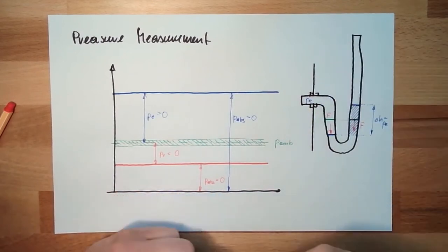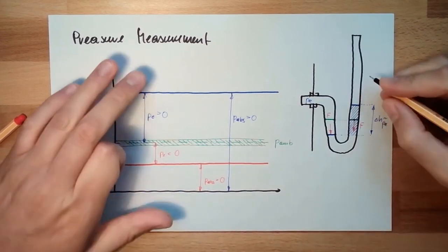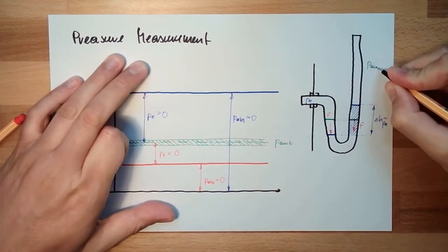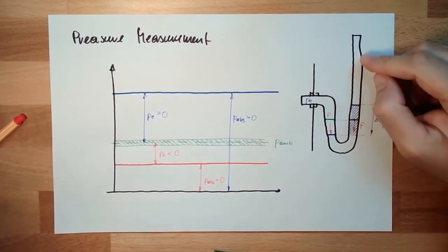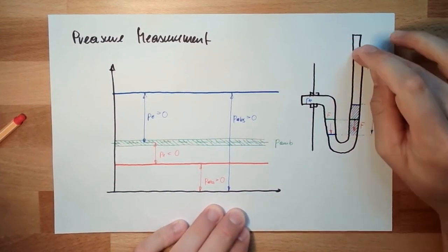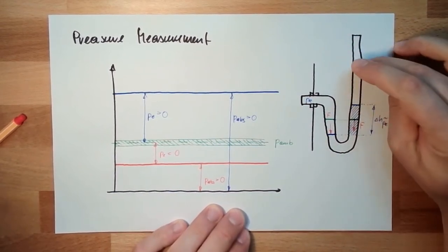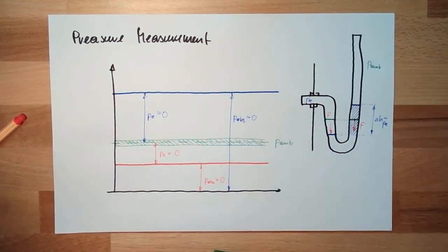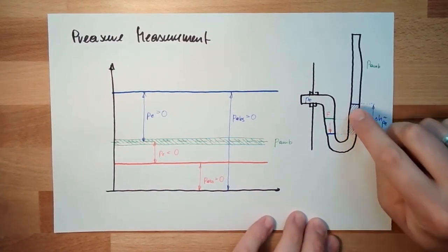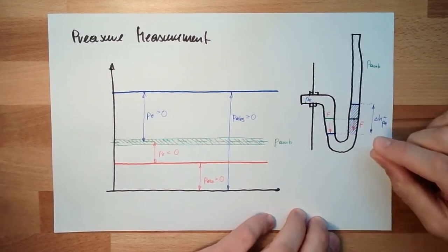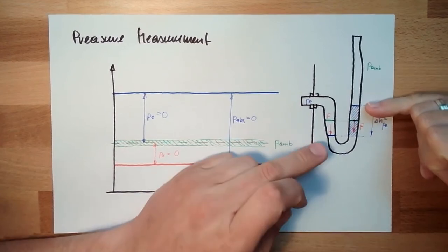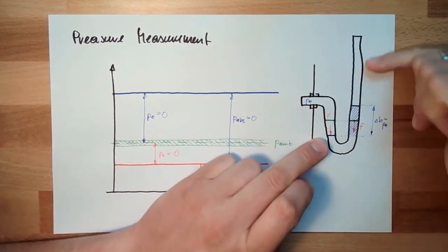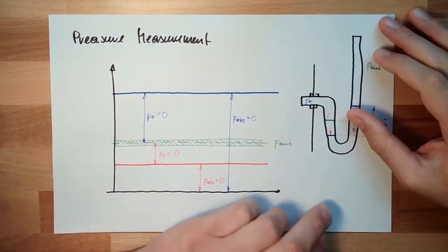Here we are open — we have the ambient pressure. So it's proportional to PE. Maybe we can think of closing it up here and putting vacuum in here, so that the pressure is zeroed, and this would then be proportional to the absolute pressure. Of course, this depends on the density of the used liquid. If we use water and have one bar excessive pressure, we would have around 10 meters height difference — that's pretty much.